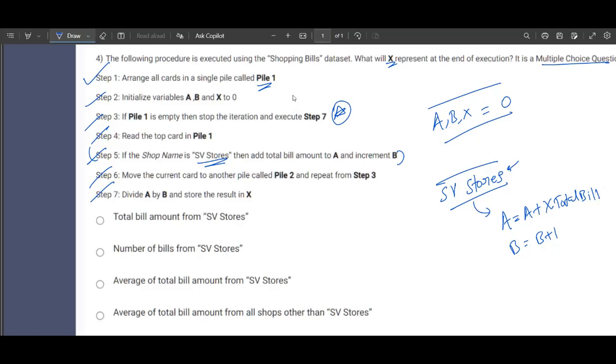Divide A by B and store the result in X. That means A by B. This is nothing other than total bill by number of bills. So what is this resembling to? This resembles the average formula or the mean in mathematics. So it is average of total bill from SV Stores. So this is about the fourth question.